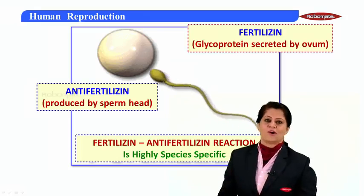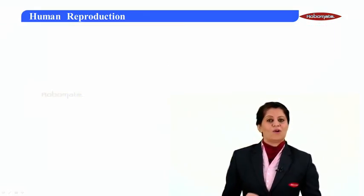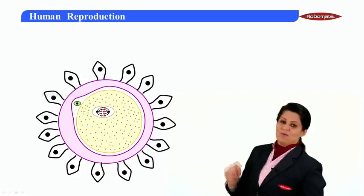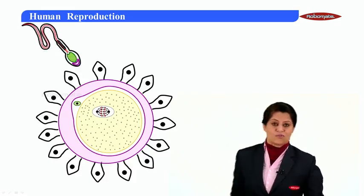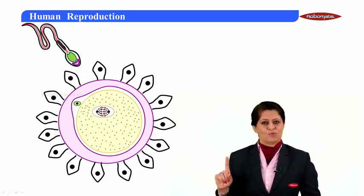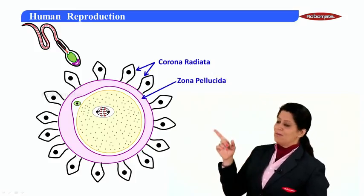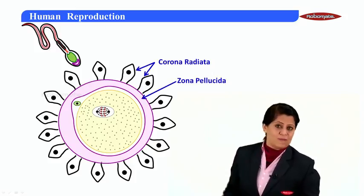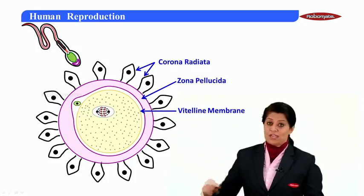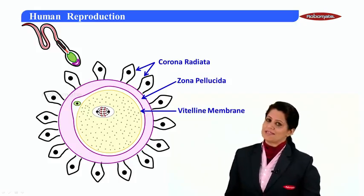That means the sperm of any other organism or animal cannot fertilize a human egg. Now, moving on to the details of the process — this is the human egg. The sperm trying to fertilize the egg has to penetrate or pass through three layers: the outermost corona radiata, then the zona pellucida, and the innermost vitelline membrane. Only after passing through all three layers will fertilization be successful.